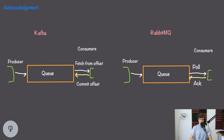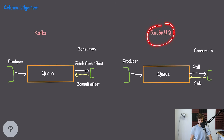RabbitMQ, on the other hand, actually does have acknowledgements. A consumer pulls the queue for new data, and when it finishes processing, it sends an acknowledgement back to the queue to confirm it successfully processed that record. RabbitMQ will wait for an acknowledgement, and if it doesn't receive one in a certain period of time, it'll send that data out to another consumer. The traditional RabbitMQ model tends to work better when we have long-running tasks that need to be acknowledged as completed or failed, while committing offsets with Kafka is great for processing batches of large quantities of small events. Many systems that use Kafka can also tolerate messages being dropped to some extent.